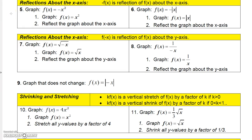Continuing in the college algebra lecture series, section 2.3, talking about graphing techniques, we're going to talk now about reflections. There are two types of reflections: reflections about the x-axis or reflections about the y-axis. When you multiply a function by negative 1, so this is minus f of x, it's a reflection of the original function about the x-axis.